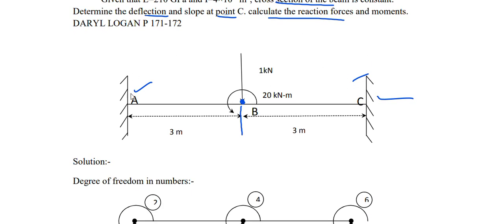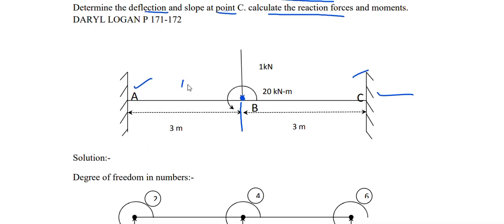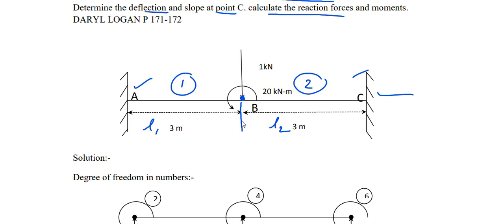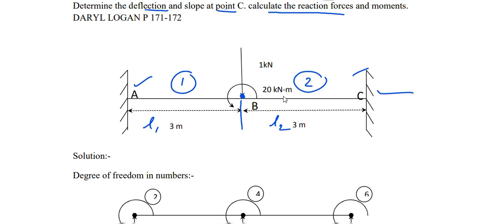First, you have to convert the body diagram into a discretized form as in the FEM method. Element 1 goes from A to B, element 2 goes from B to C, with lengths L1 and L2. The nodes are A, B, C — meaning there will be 3 nodes, 2 elements, 2 lengths, and the cross-sectional area is constant throughout.